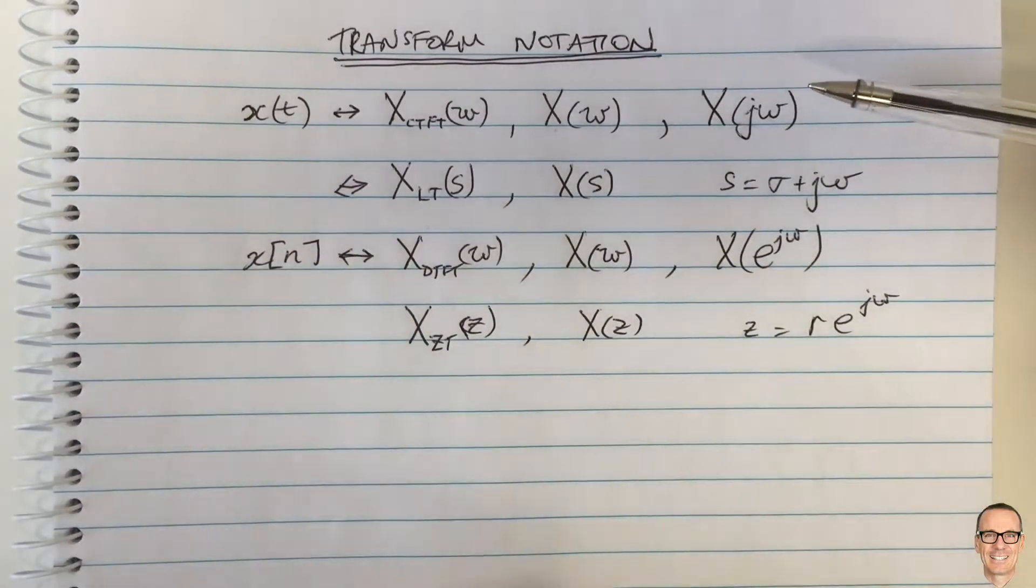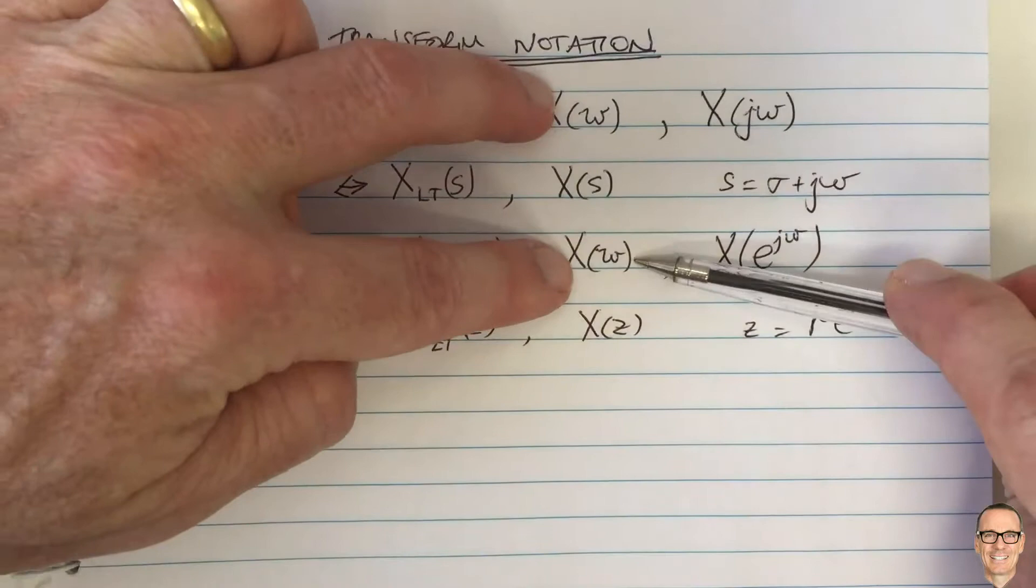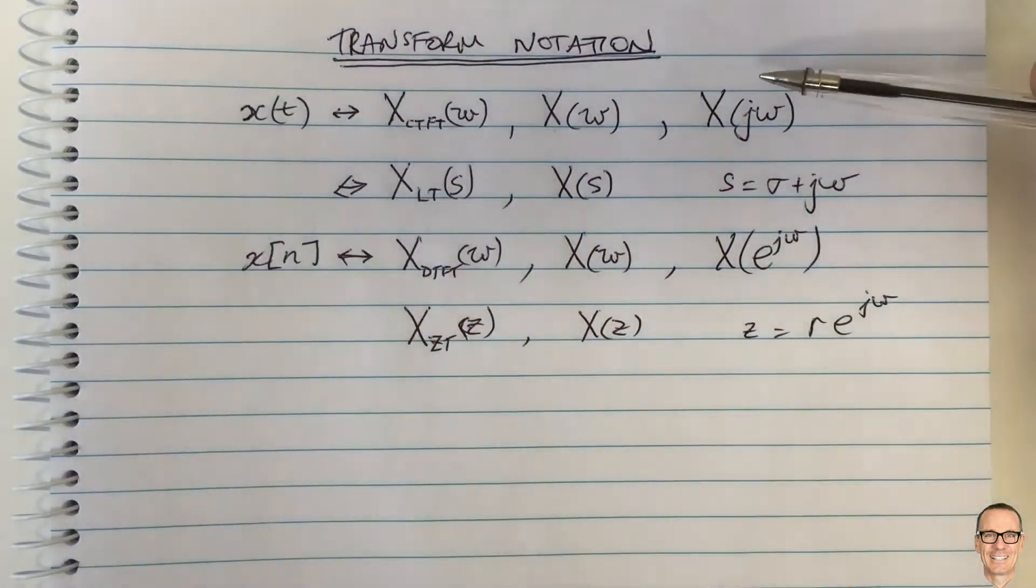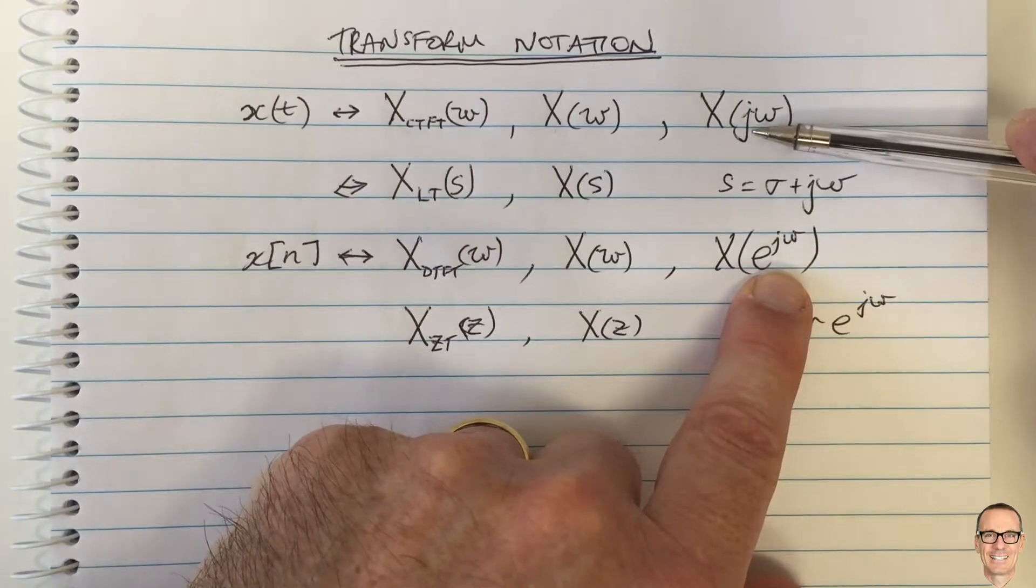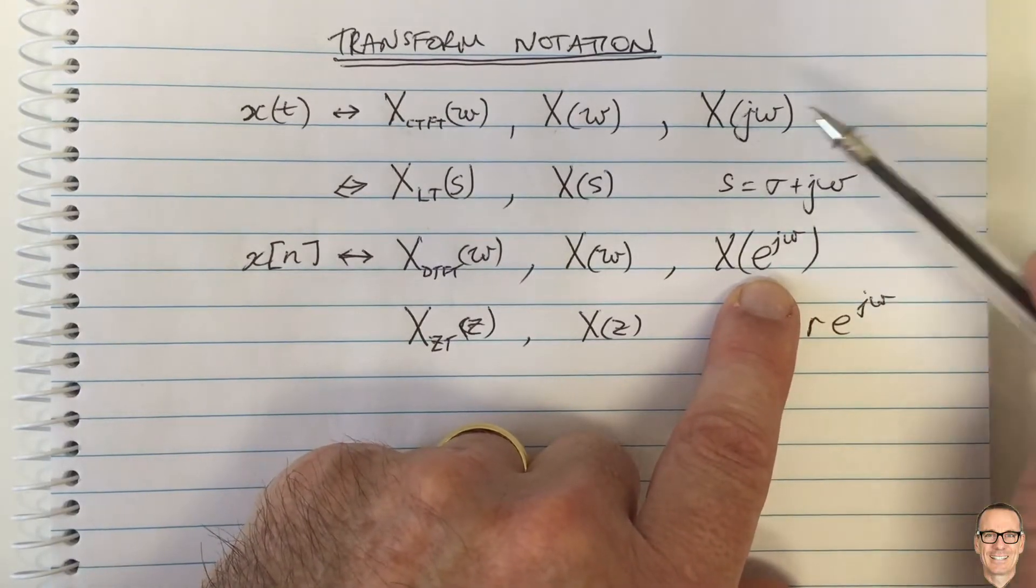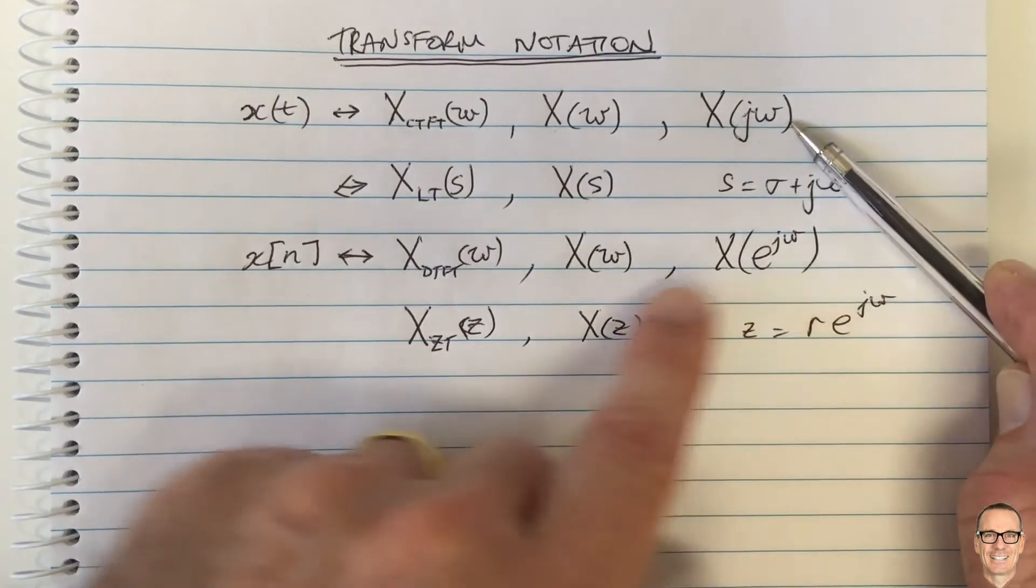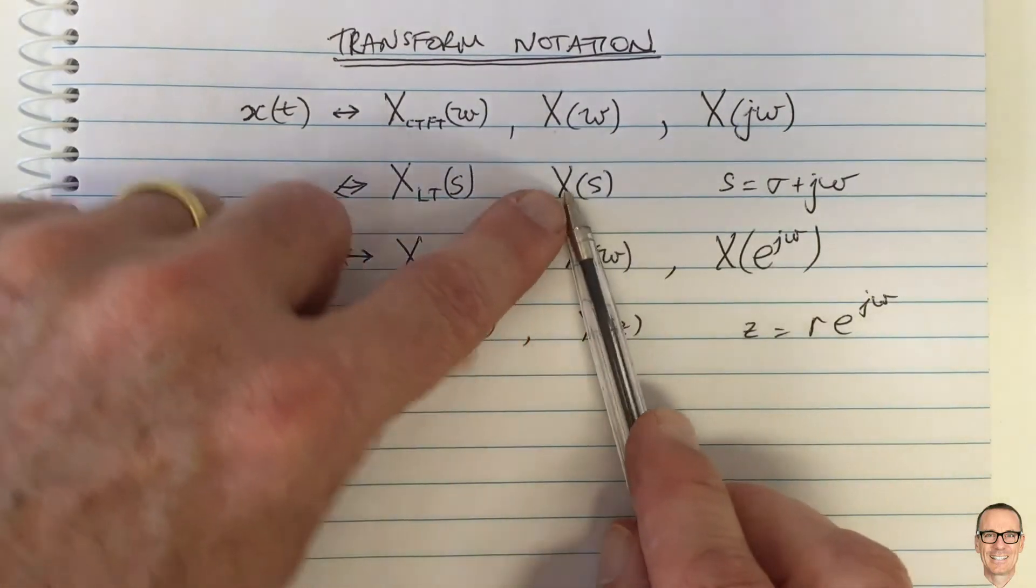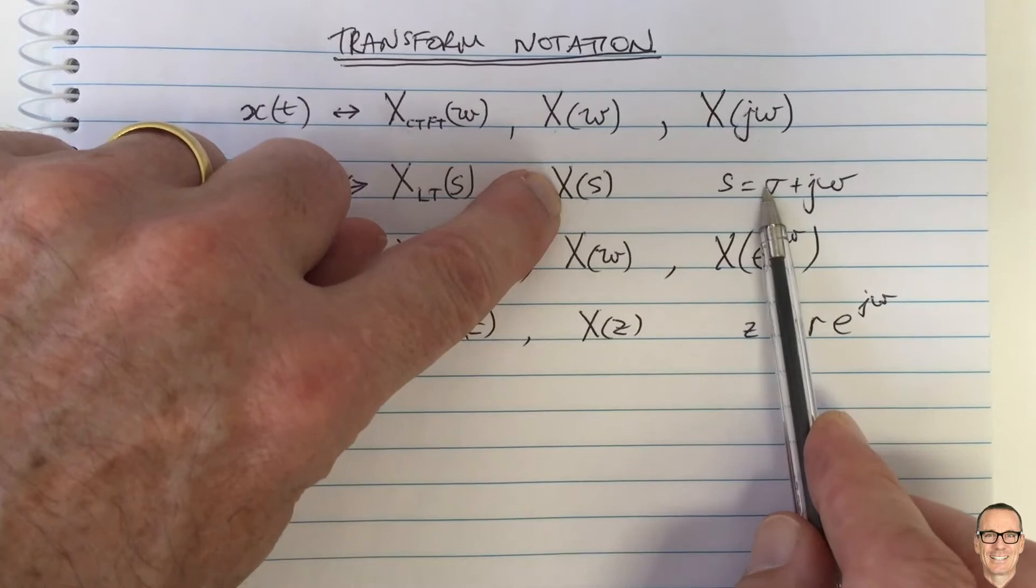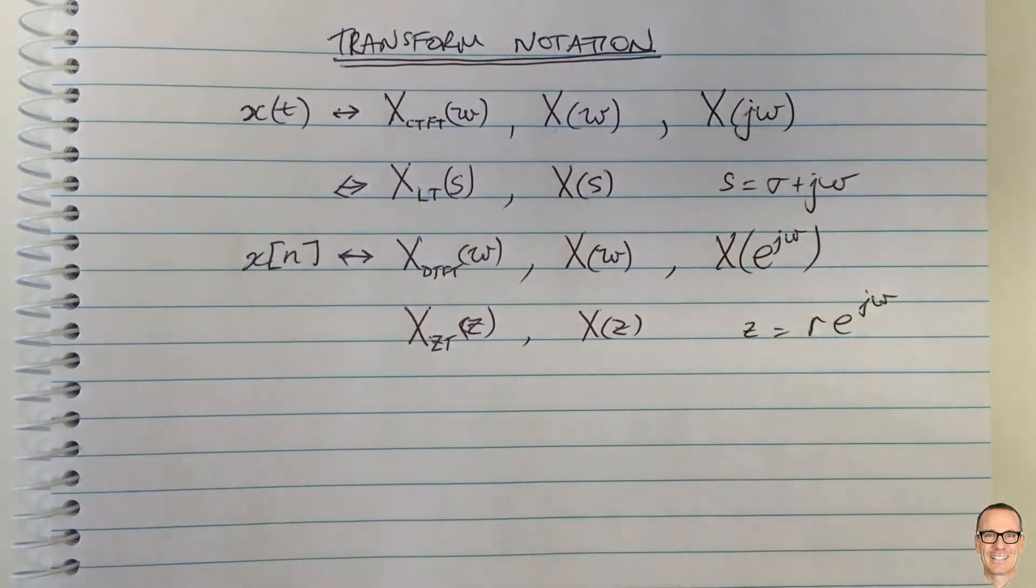So sometimes all you see are these, in which case it's confusing between those two. And sometimes you see these and people often get confused. Why is there a J? Why is there an E to the J? Well, this explains it. This is the continuous time. This is the discrete time. And it comes about because of the special cases of the Laplace when sigma equals zero and the Z when R equals one.